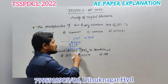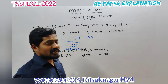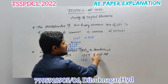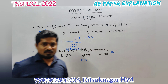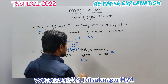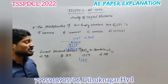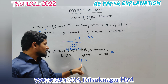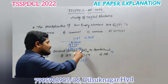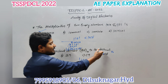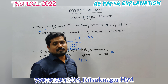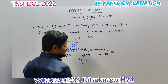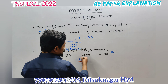The next question from TSSPDCL AE is also very simple — we need to convert a decimal number to hexadecimal. The number is 185 in decimal, and we need to convert it to hexadecimal, which has base 16. Whenever we convert decimal to any other number system, we divide the integer value by the base. For hexadecimal we divide by 16.